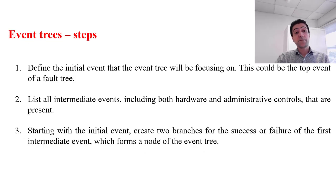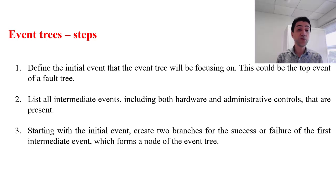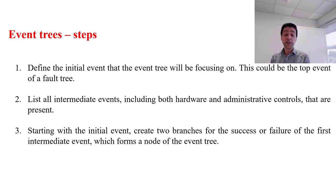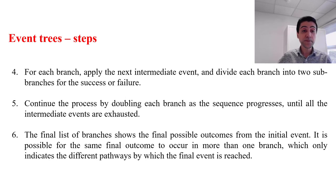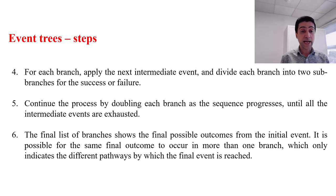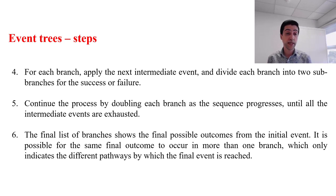Steps to define event trees are as follows. First, we need to identify the initial event. In the second step, we create a list of intermediate events. Starting with the initial event, we create two branches for success and failure. We continue this for other intermediate events in step four, and in step five we continue the process until all intermediate events are exhausted. Finally, we have a list of branches showing the final possible outcomes, and our event tree is ready to be used.